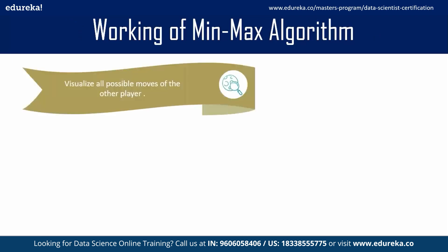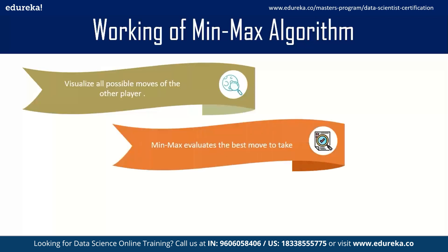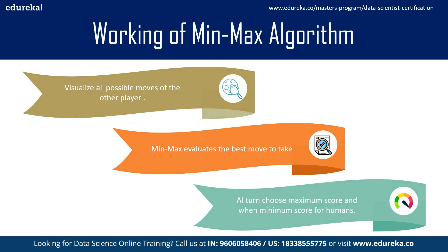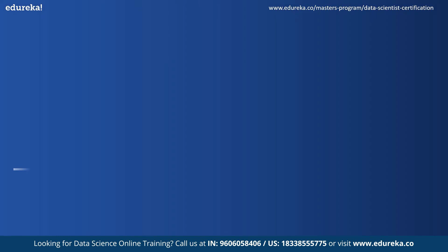With the help of MinMax algorithm we can visualize all the possible moves of the other player. The MinMax algorithm evaluates the best moves to take - when it is the artificial intelligence turn, maximum score is chosen, and when it is the turn of a human, minimum score is chosen. So now let's implement this game tic-tac-toe in Python and let's have a little fun playing this game with the computer itself.